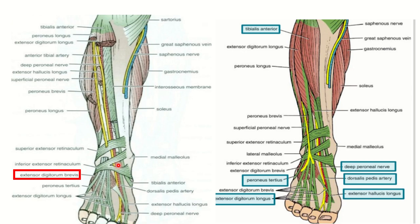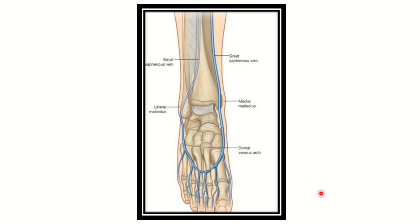The extensor digitorum brevis is closely related to the dorsalis pedis artery, and is crossed by it. In the second picture we can see clearly the extensor digitorum brevis and the dorsalis pedis artery crossing it, along with the associated nerve. In another picture, we can see the artery reaching the first interdigital space.